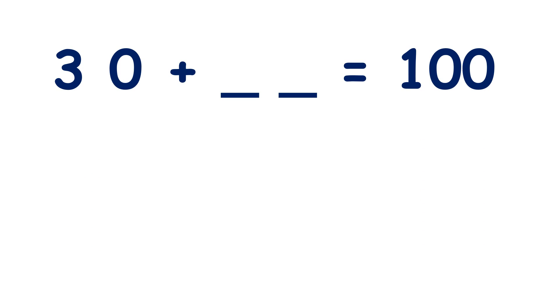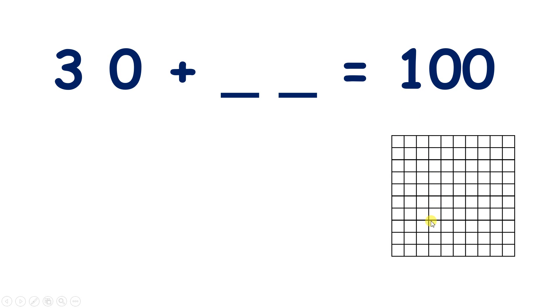Now we have 30 plus something equals 100. So on a 100 square, if we have 10, 20, 30, or 3 tens, how many more tens will we need to make 100?